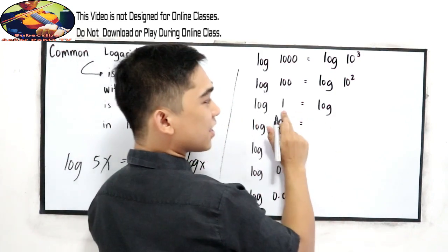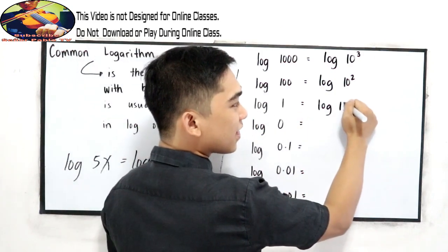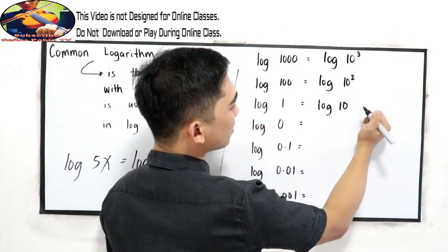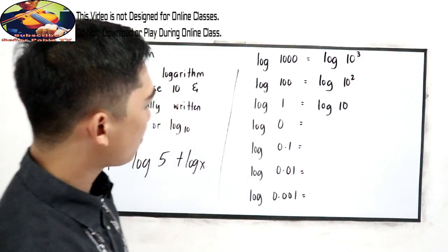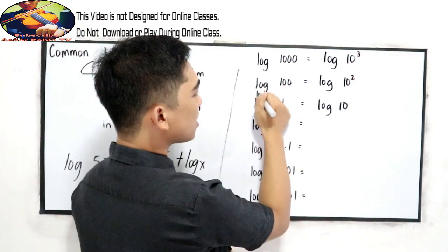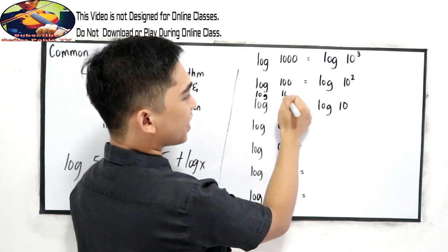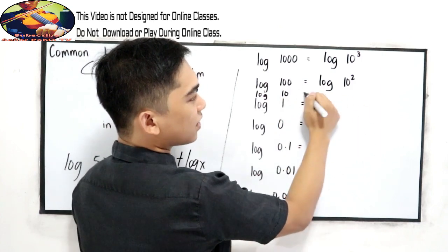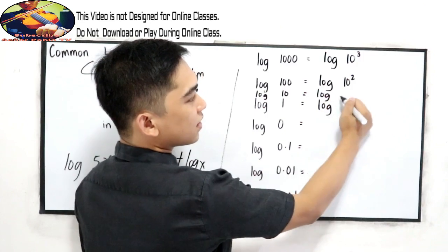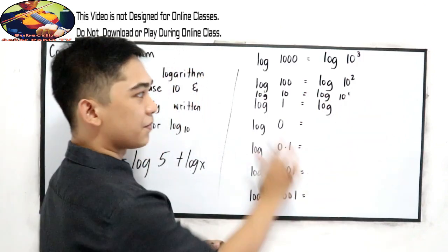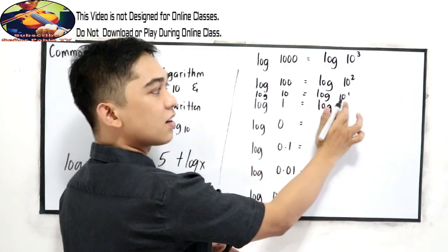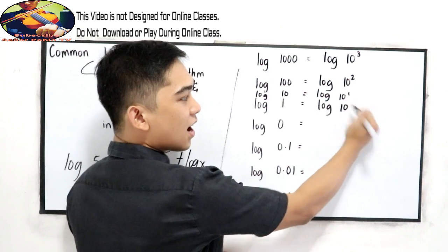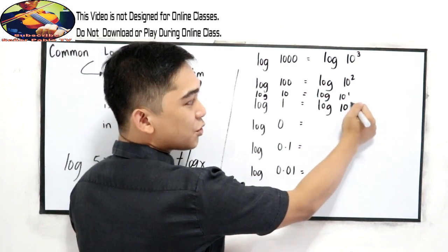Log, this is 1. We have a missing number here, so we're going to use log 10. Log 10 is equal to log 10 raised to 1. How about log 1? That is log 10 raised to 0, because any number except for 0, when you raise to 0, that is equal to 1.